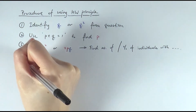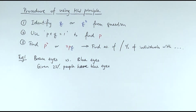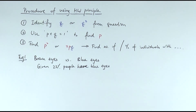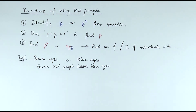Let's start with one example. Typically the question gives you people with brown eyes and blue eyes. Brown eyes are caused by the dominant allele, and blue eyes are caused by both recessive alleles together. The question says: given 23% of the people in this population have blue eyes, find the percentage of people who are heterozygous or homozygous dominant. We can't just say 77% have brown eyes — the question asks for exact genotype percentages.